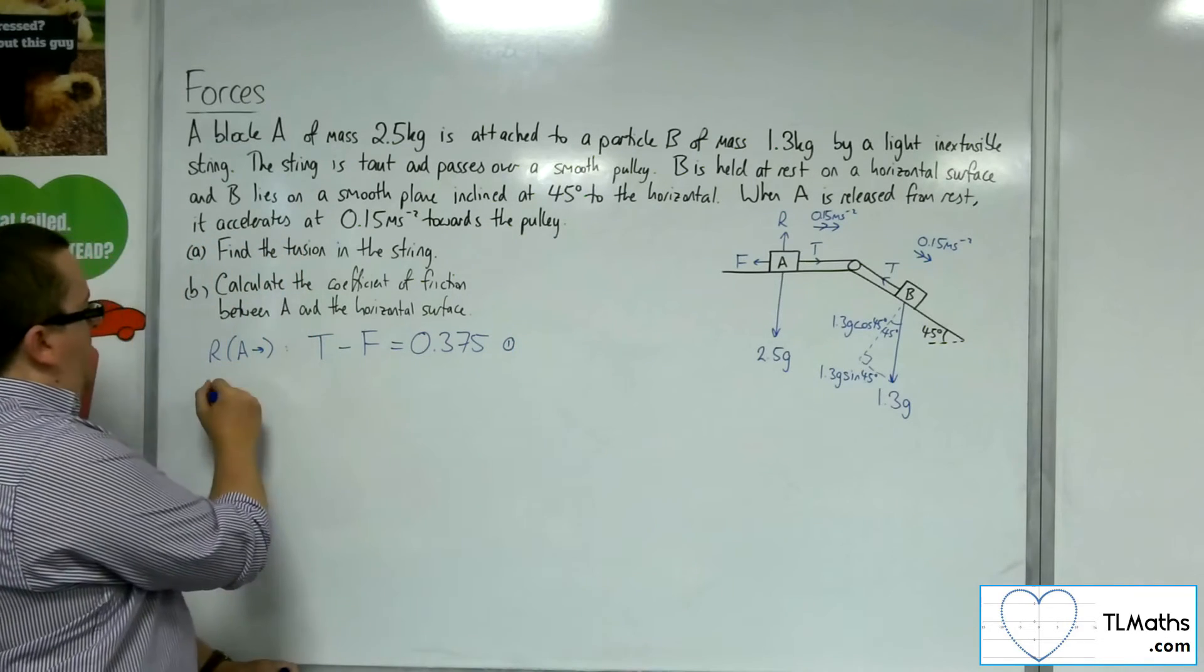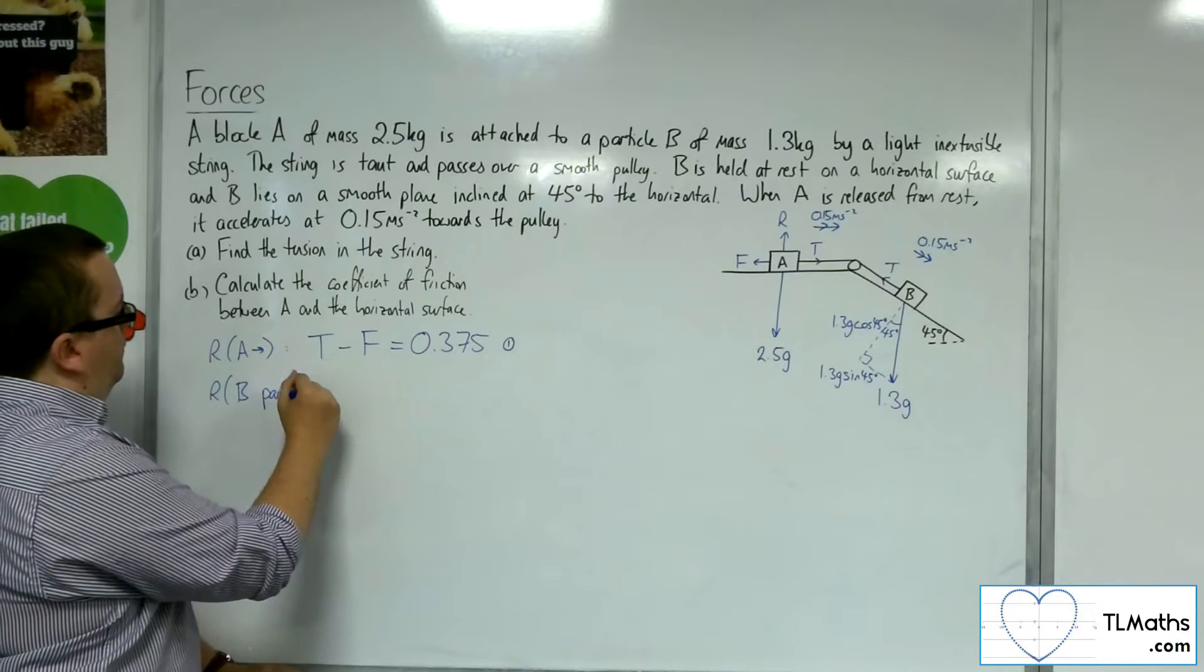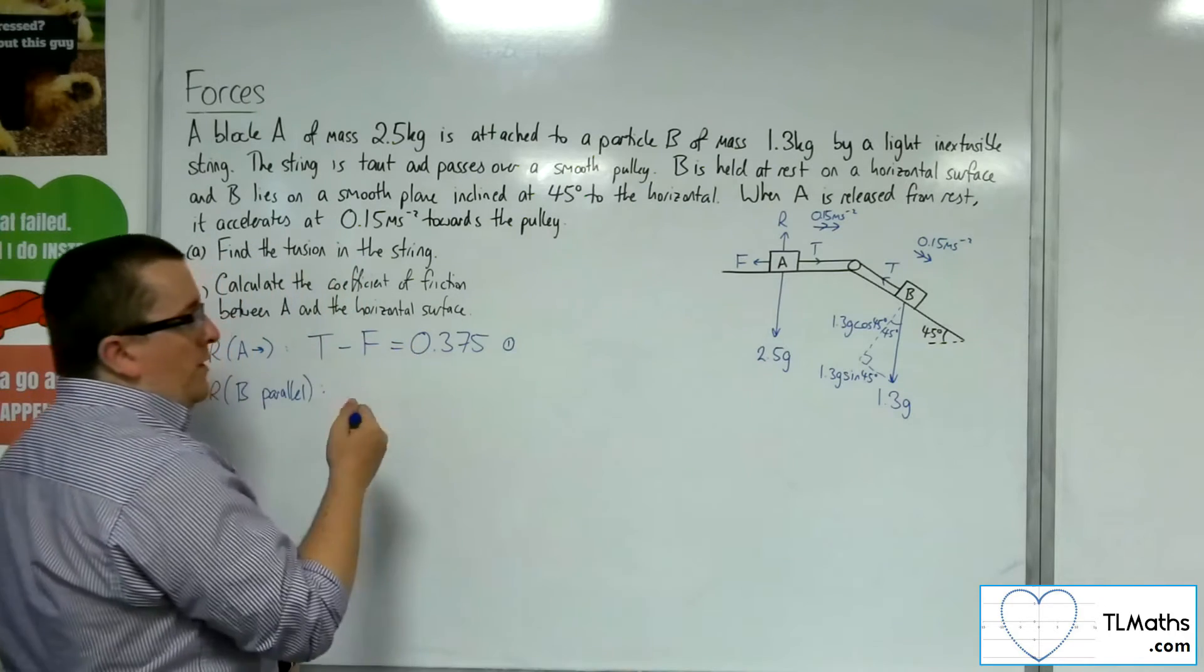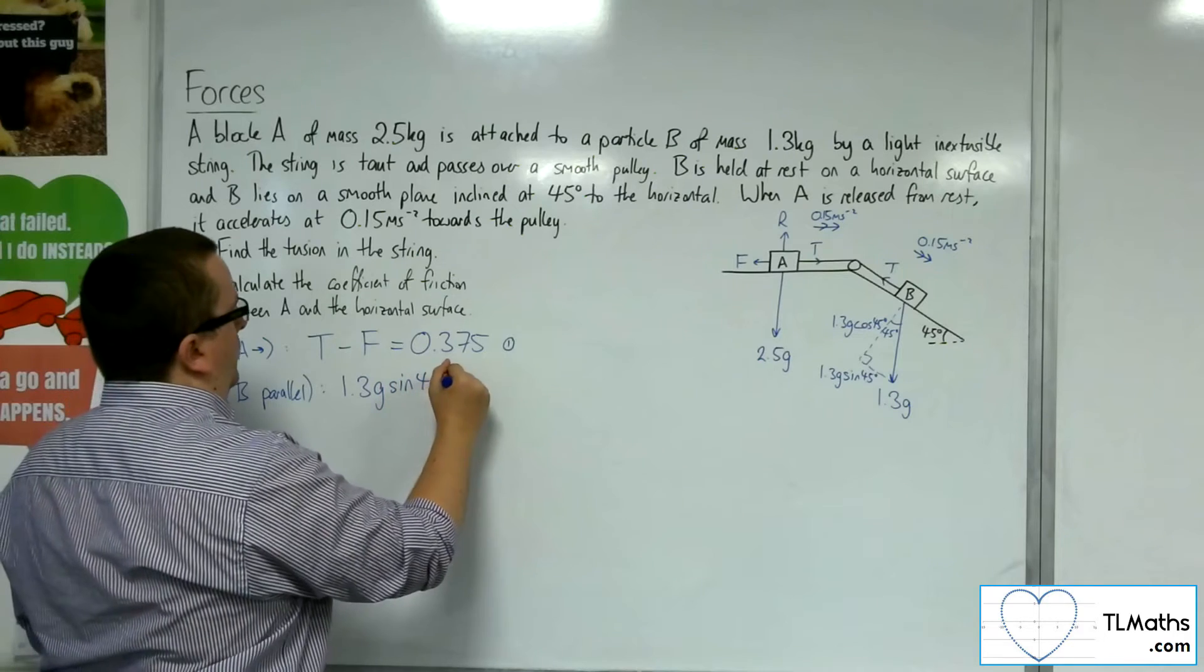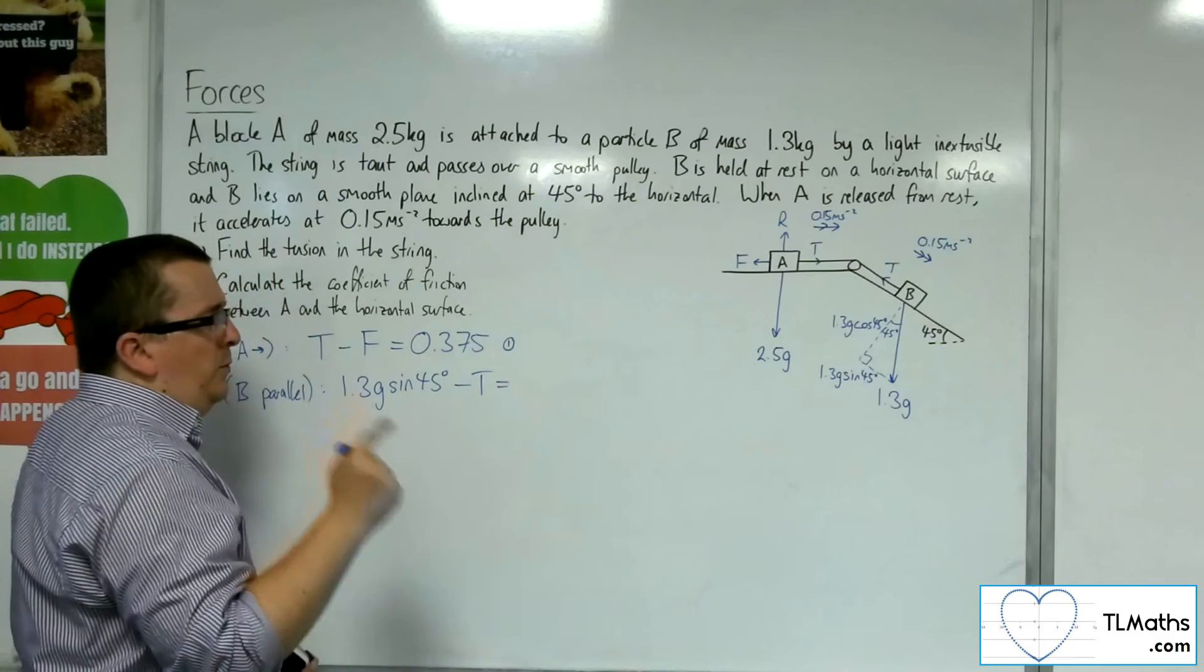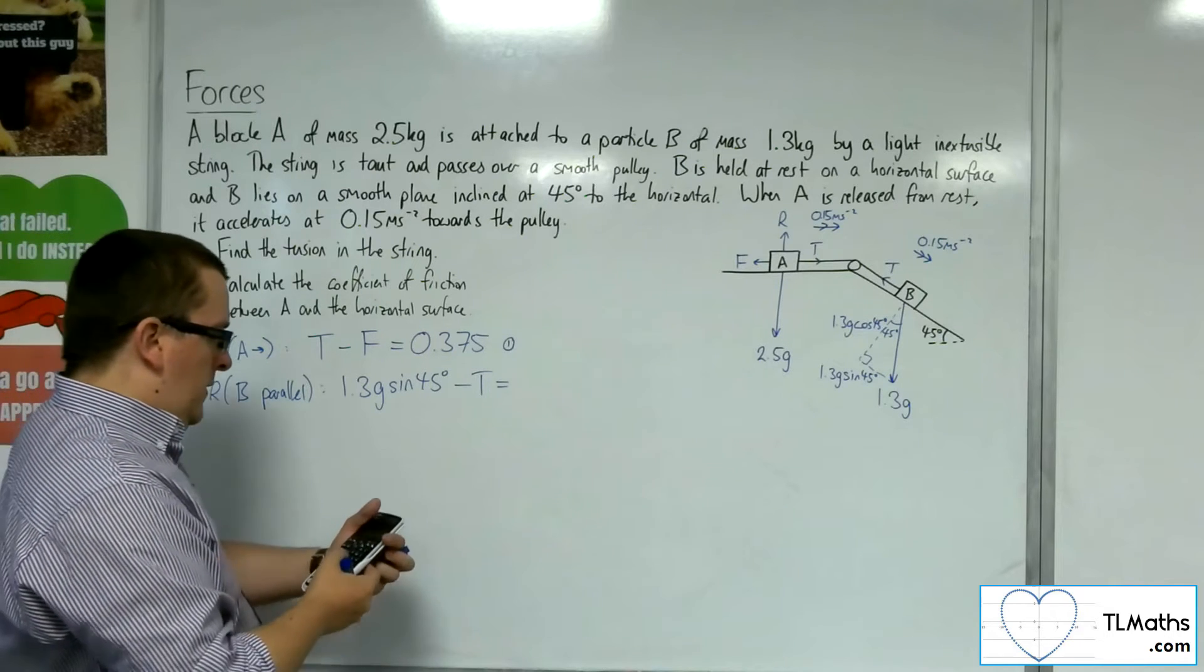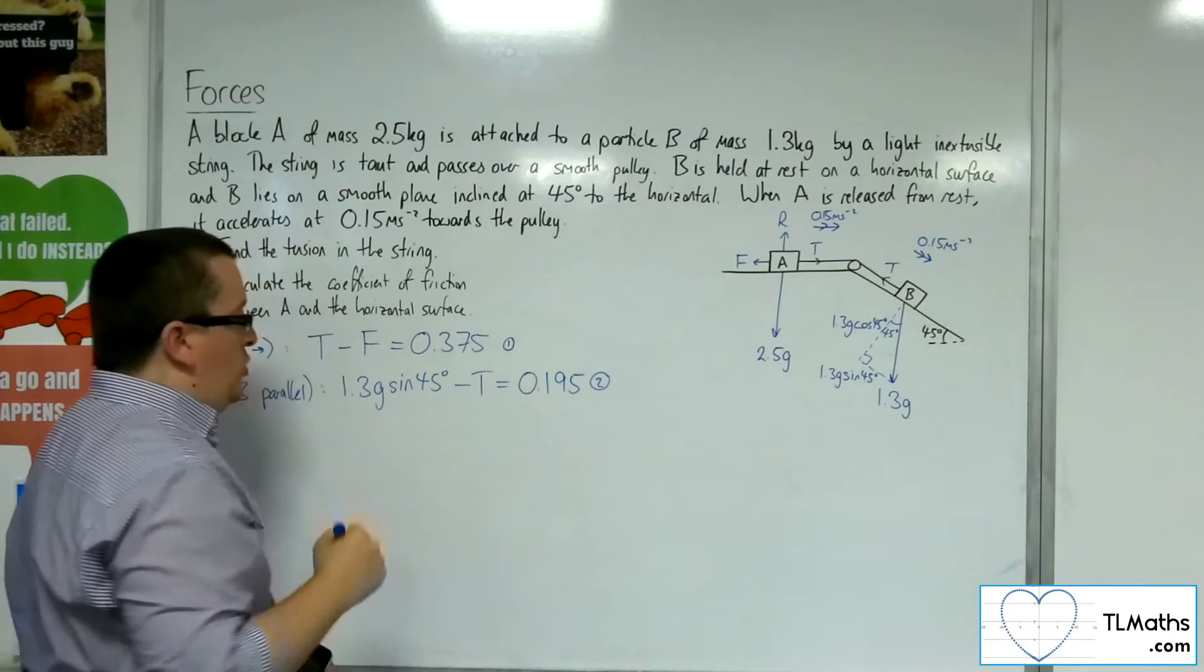So let's now resolve B, and we're going to be parallel to the plane. So taking down the plane as positive, we've got the weight working downwards. So we've got the 1.3 G sine of 45. And working against me is the tension. And that's got to be equal to the mass times acceleration. So 1.3 times the 0.15, which is 0.195. Right, so there's equation number 2.